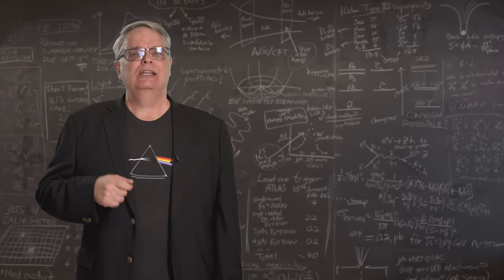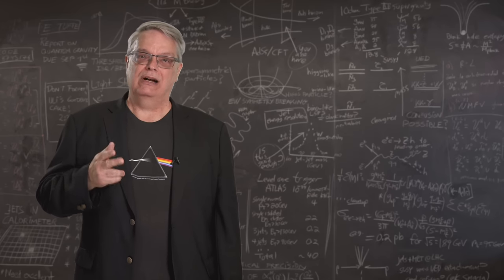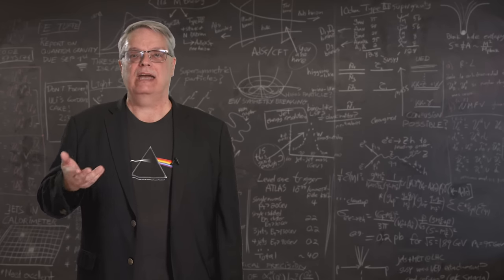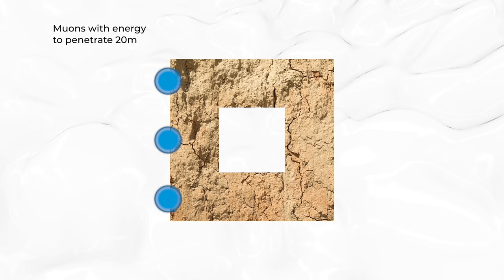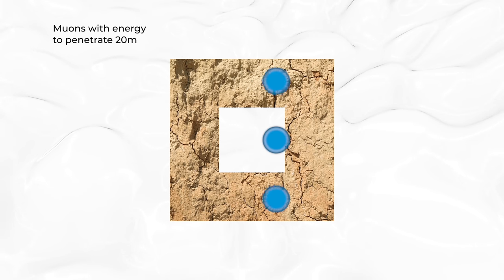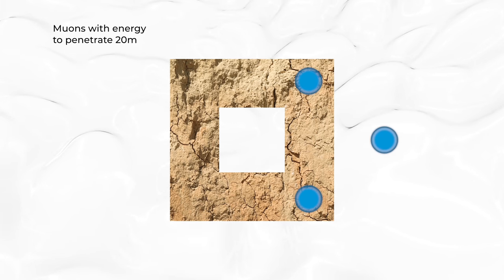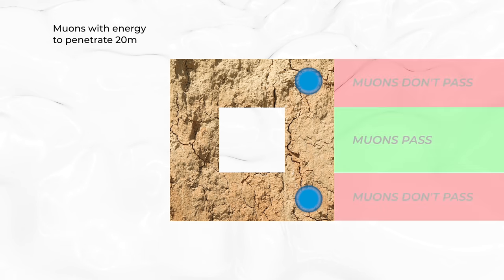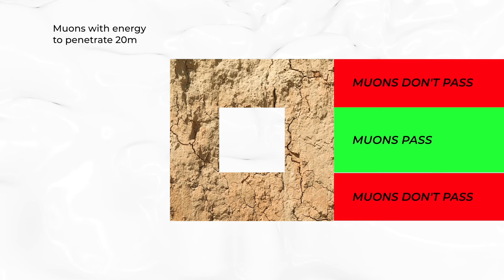But what about a twenty-five meter thick wall that hides a ten meter wide cavern inside? A muon that passes through the cavern sees only fifteen meters of rock. So if you shoot muons with that amount of energy at a rock wall with a big enough cavern inside it, in some places the muons punch through, in some places they don't.